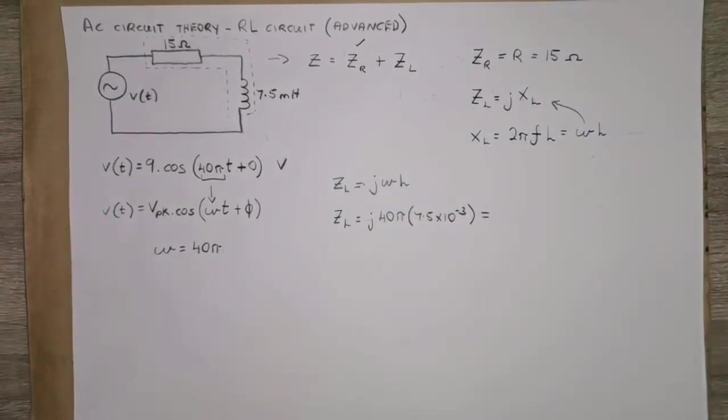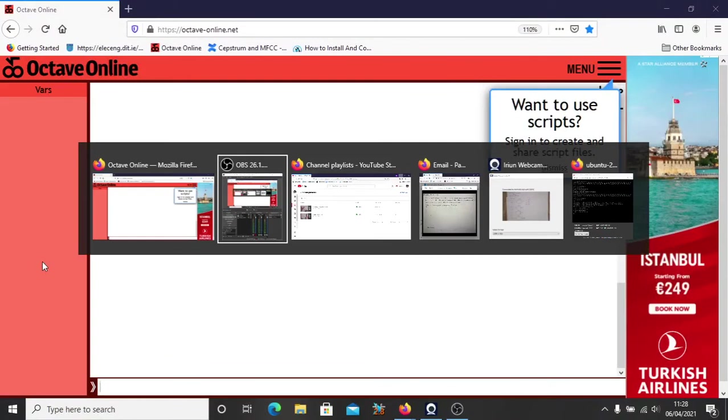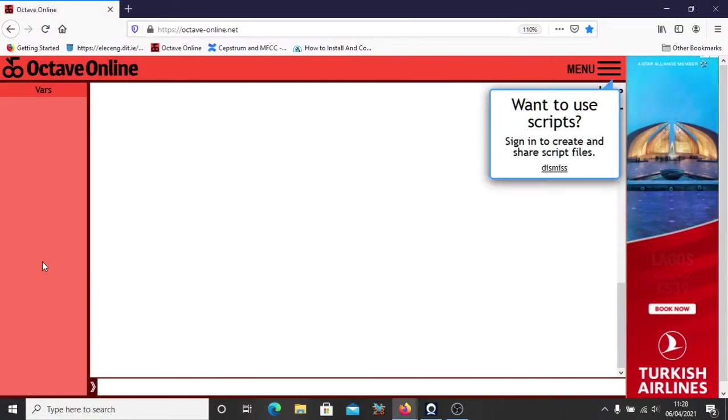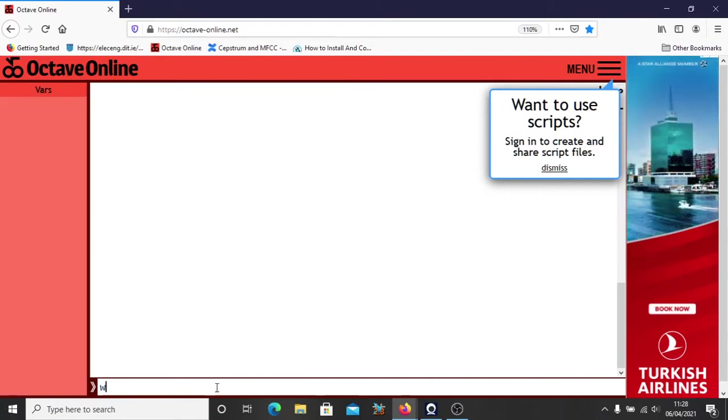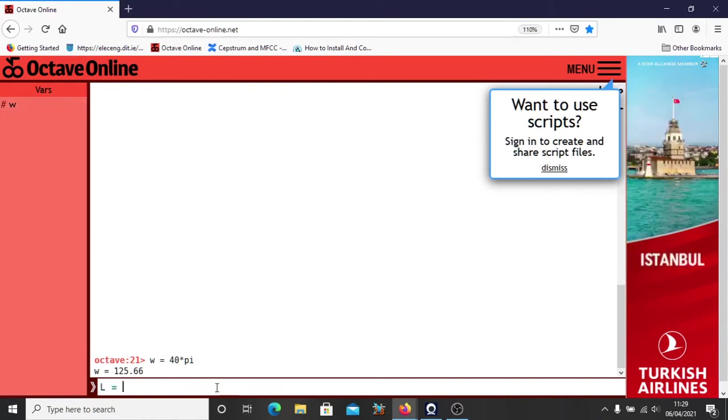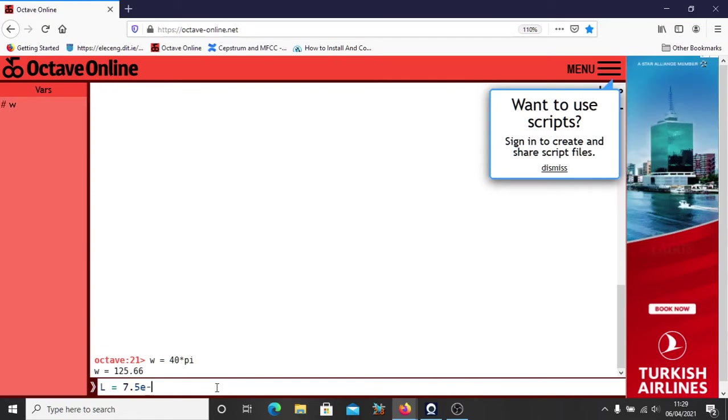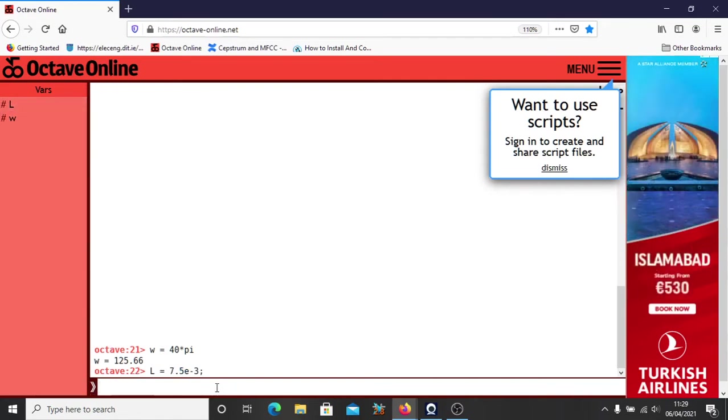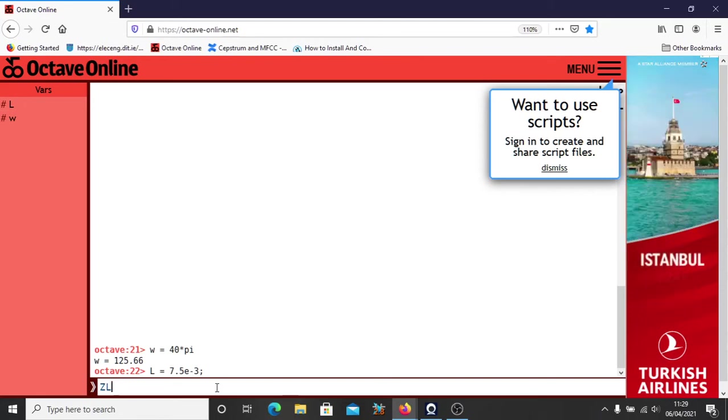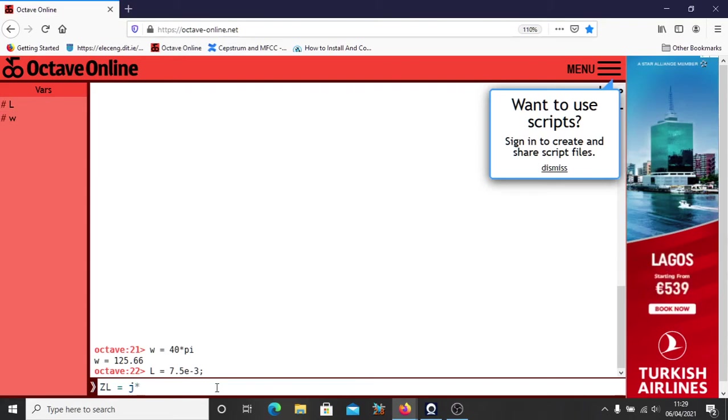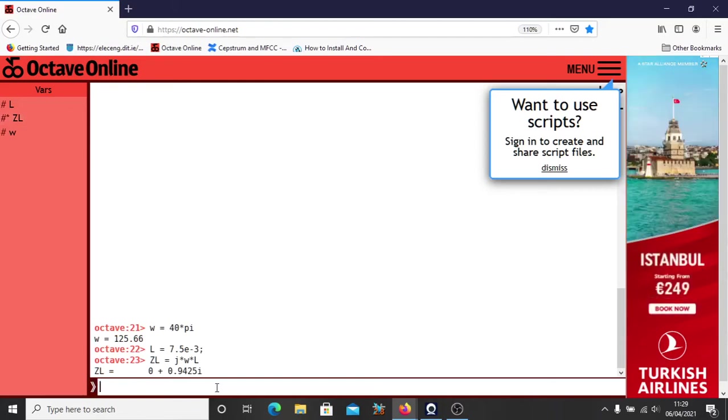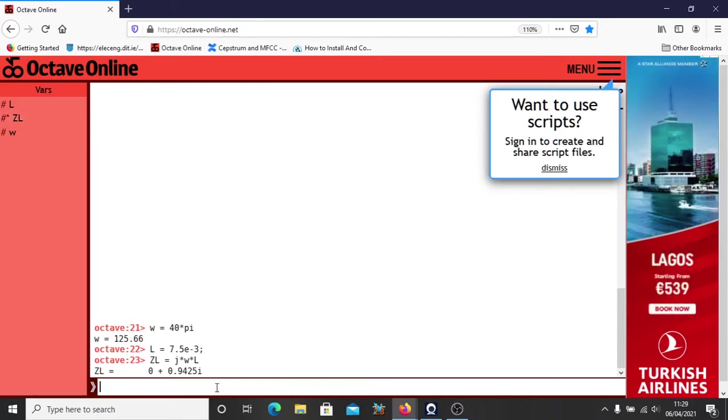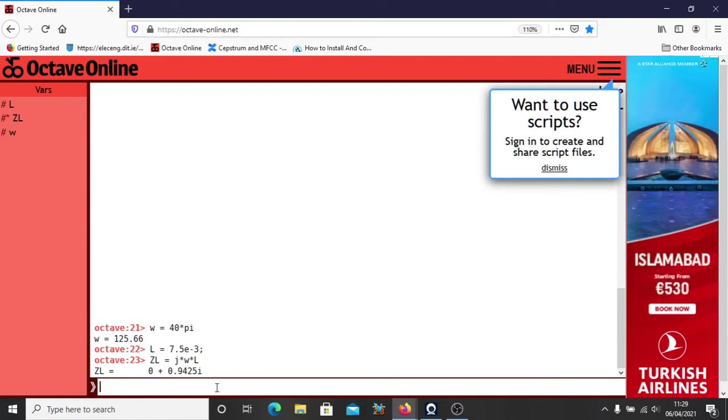And I'm going to do this on Octave again. Let's just put in a couple of values. We have omega this time. It's 40 times pi. Our inductance is 7.5 millihenries. That means the impedance of our inductor, Zl, will be j times omega times l.